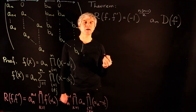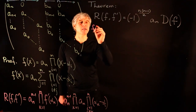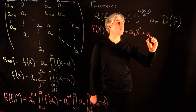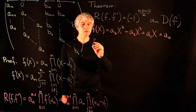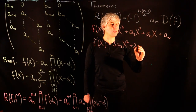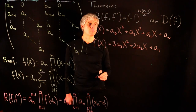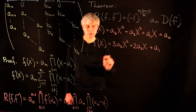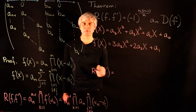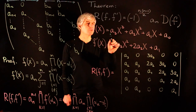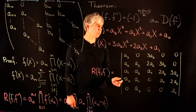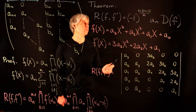As an application, let us compute the discriminant for cubic polynomials. Here f(x) = a_3 x^3 + a_2 x^2 + a_1 x + a_0, and its derivative is f'(x) = 3a_3 x^2 + 2a_2 x + a_1. Polynomial f has degree 3 and f' has degree 2, so the resultant R(f, f') is the determinant of a 5×5 matrix. The first two columns come from the coefficients of f and the last three from f'. Computing this 5×5 determinant and applying the theorem gives the formula for the discriminant of a cubic polynomial.